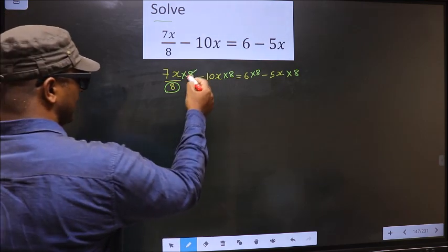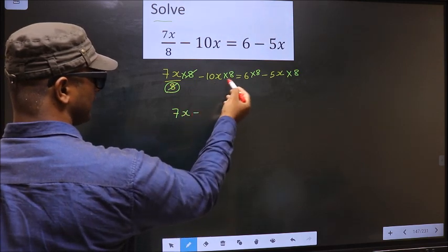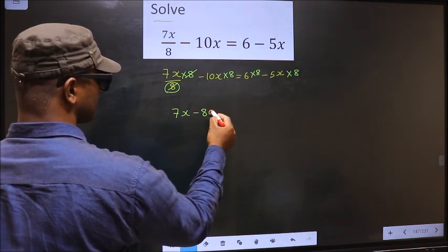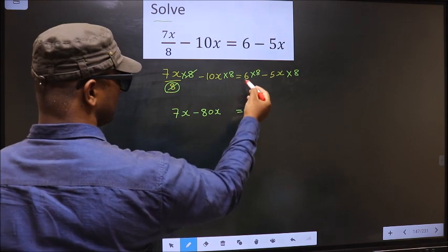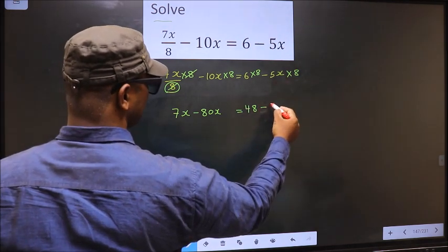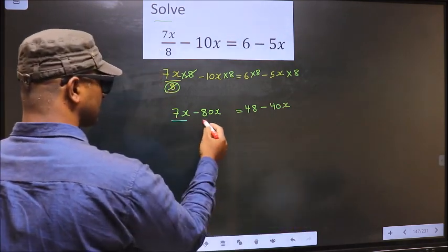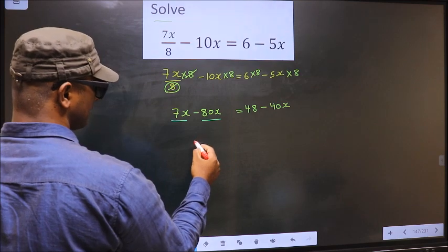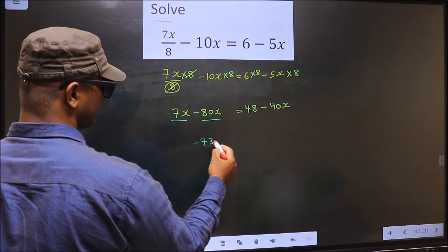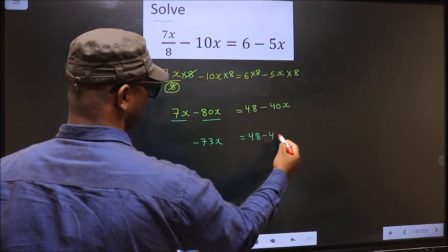Now 8 cancels out. We get 7x minus 10x times 8 is 80x equals 6 times 8 is 48 minus 5x times 8 is 40x. Now 7x minus 80x will result in minus 73x equals 48 minus 40x.